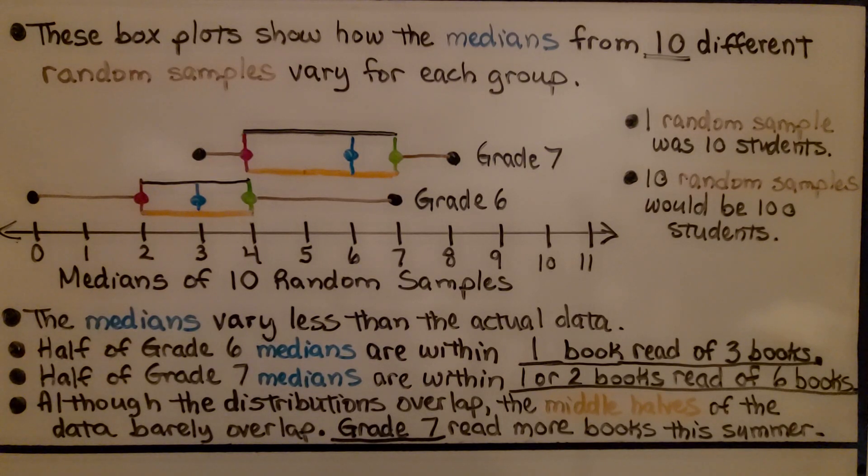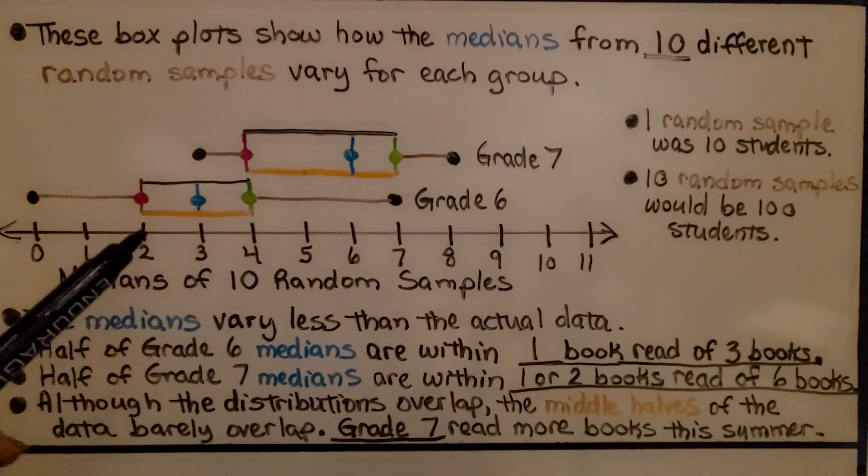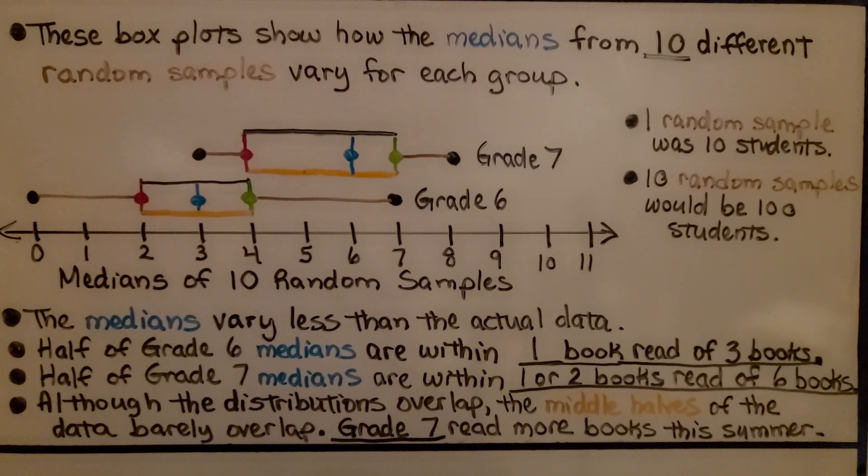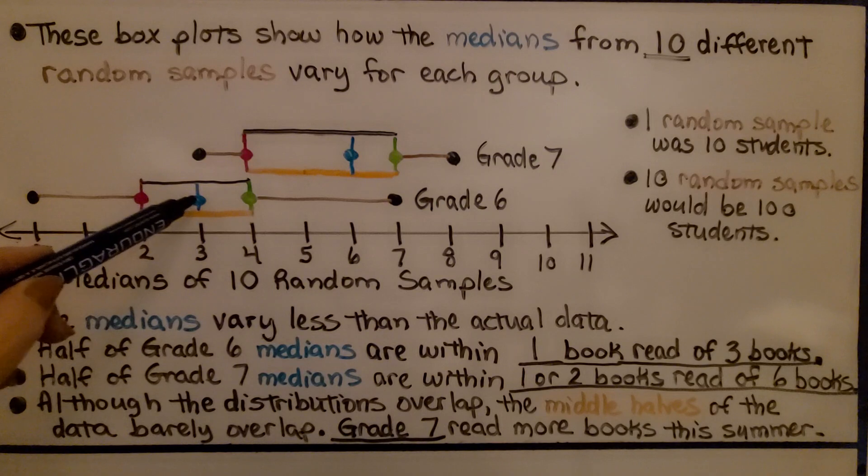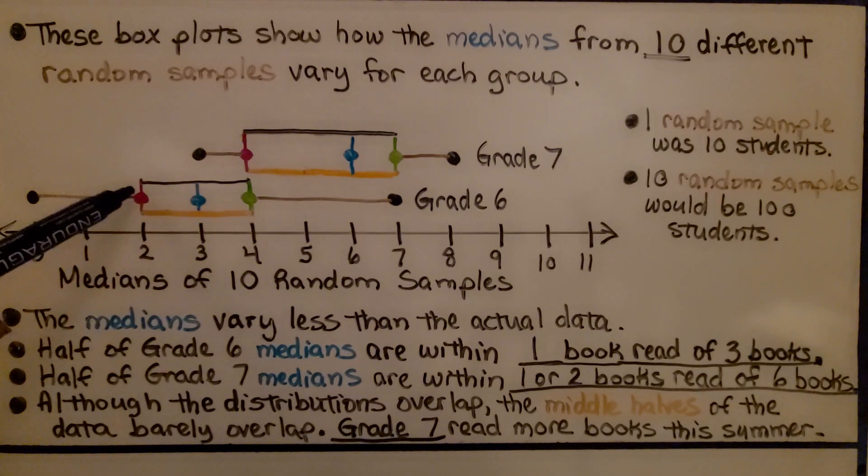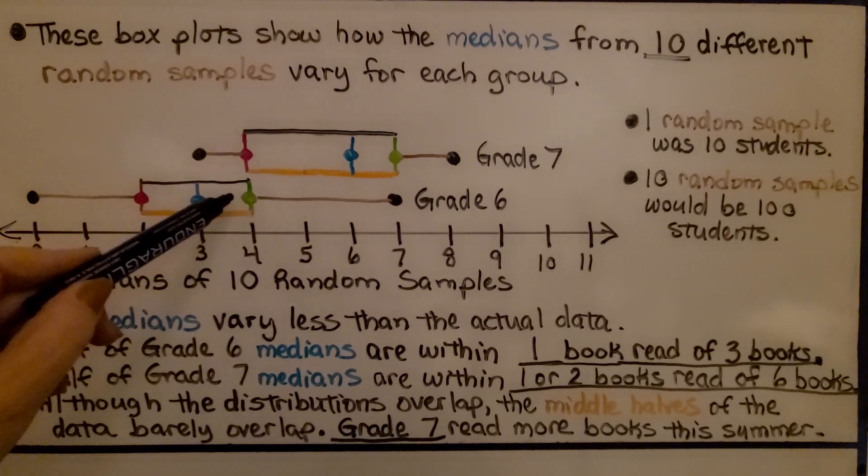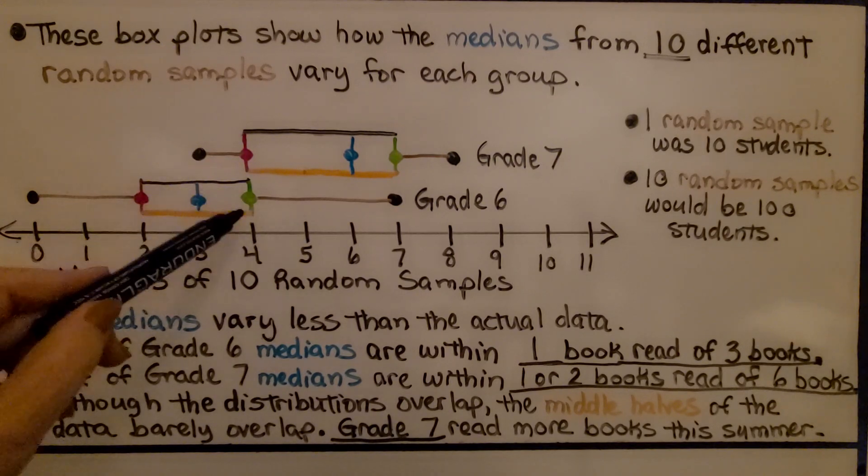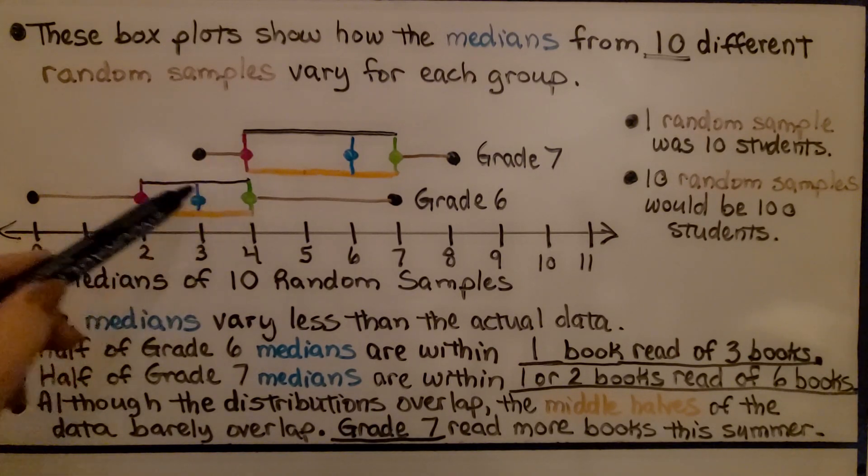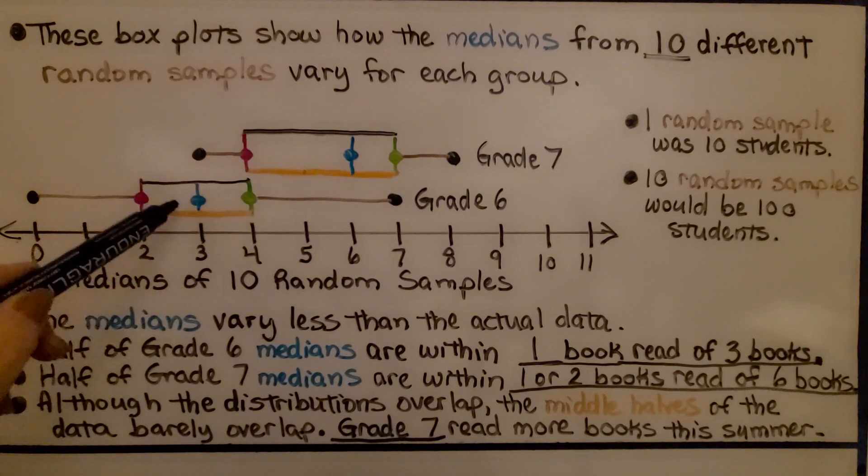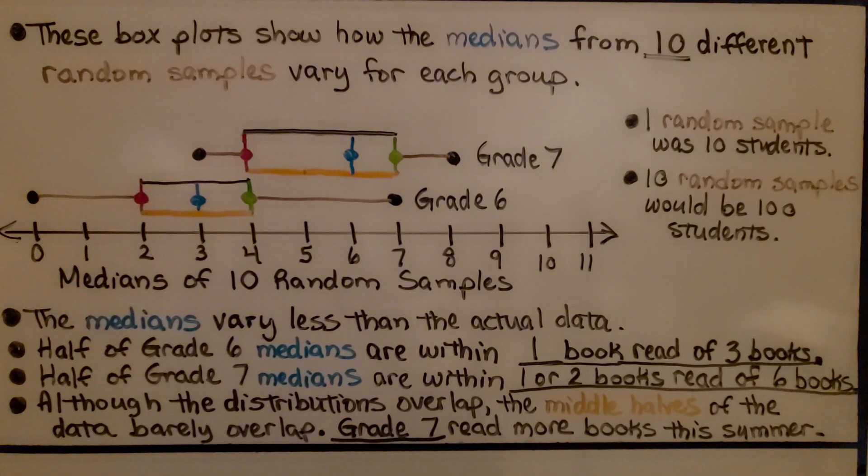And the medians vary less than the actual data. Half of grade 6 medians are within one book read of three books. So here's grade 6, the median is 3, and it's got for the first quartile a 2 and a 4 for the third quartile. See how they're within one read book? One book has been read away from the median. And if you look at grade 7, the medians are within one or two books read of six books.